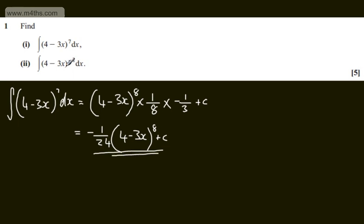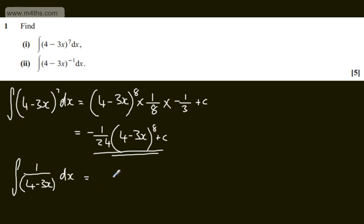So that's the first one done. For the next one, I'm going to rewrite this as the integral of 1 over the quantity 4 minus 3x with respect to x. This is going to give us a log function, so we can say that this is the natural log of the modulus of the inside function, which is 4 minus 3x. We need to divide through by the derivative of the inside function, which is going to be minus 3.